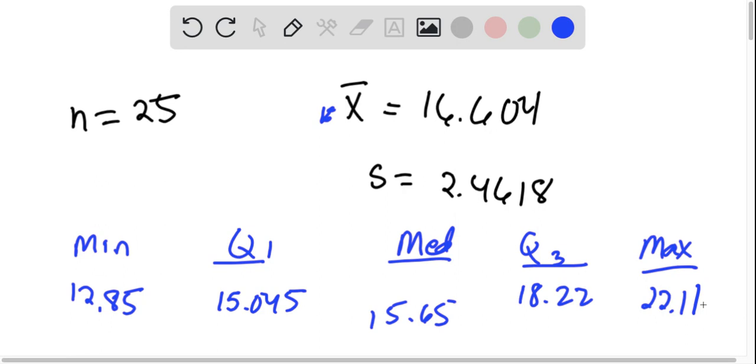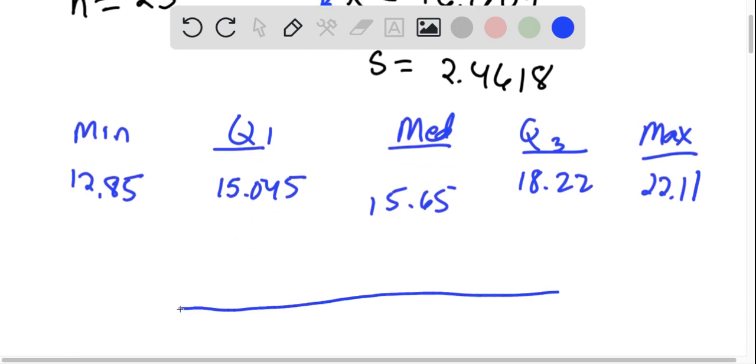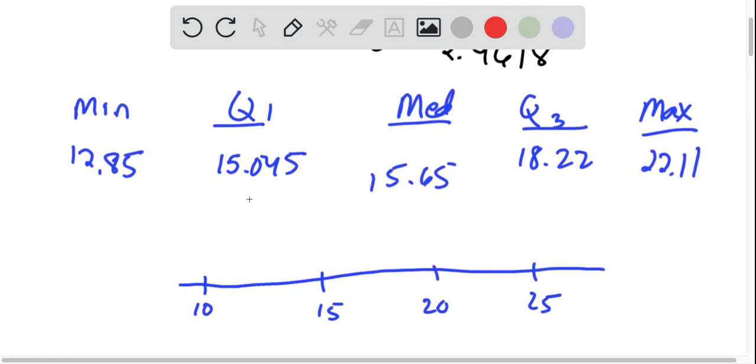And so if we just quick make a little sketch of this, we go down. Let's say this is 10, here's 15, here's 20, here's 25. And we put our 12.85. Let's see, it would be about here. And the 15 would be about here. And the median of 15.65 is going to be about here.